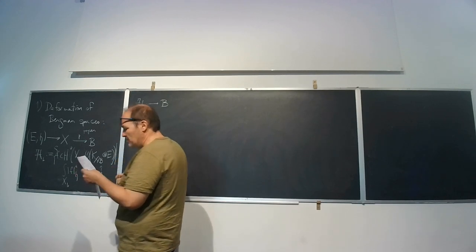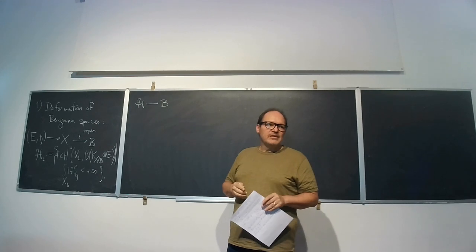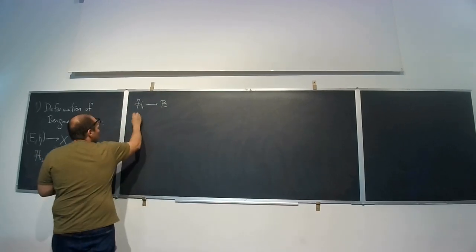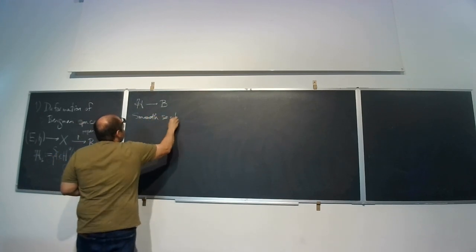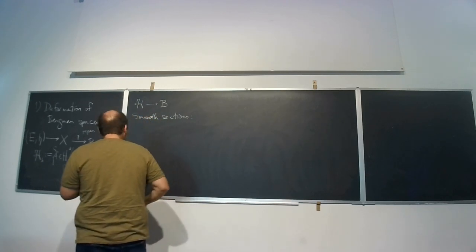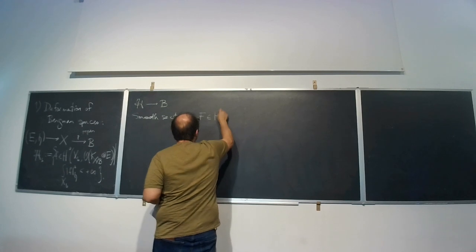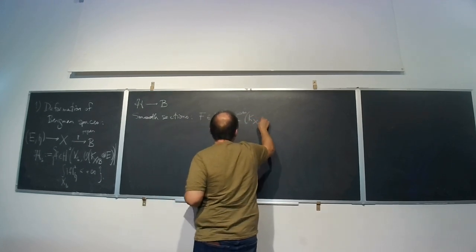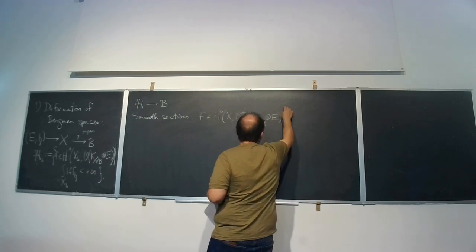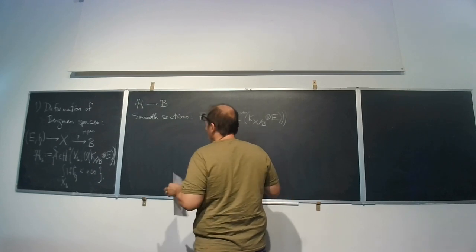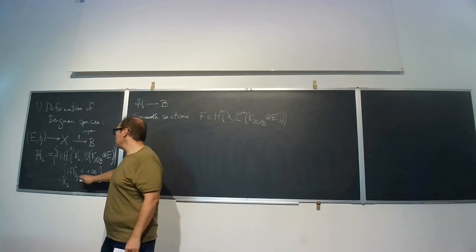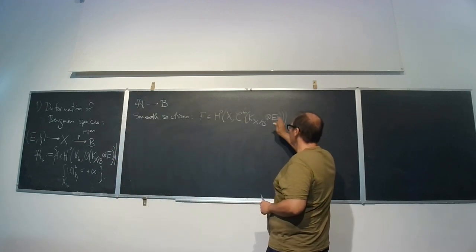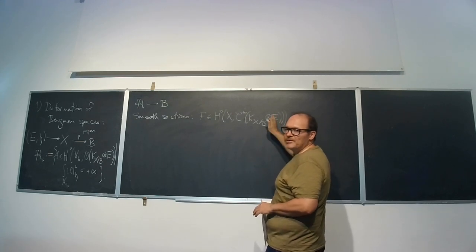To do that, I'm going to describe first what the smooth sections are. These are just sections over the total space of the relative canonical bundle tensored with E. In the proper case with a smooth metric, the finite L2 norm condition is automatic. So there's an implicit L2 norm on these spaces.